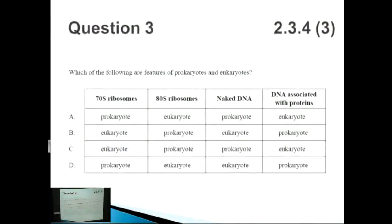Question three. Which of the following are features of prokaryotes and eukaryotes? Just talked about the ribosomes before. So straight away, we know that 70S ribosomes are prokaryote, and 80S ribosomes are eukaryote. So in this case, we can cross out B and C because this is incorrect.